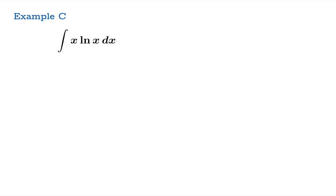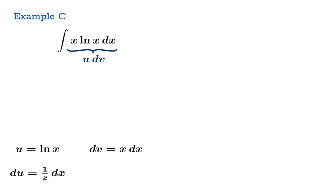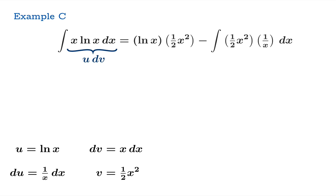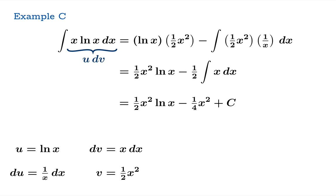Let's look at a final example: x·ln(x). Once again we choose u and dv to account for the whole integrand. We take u = ln(x) and dv = x dx. Then du = (1/x)dx and v = (1/2)x². Now, uv minus the integral of v du gives us our expression, and you'll notice there's cancellation in the integrand on the right, giving something whose anti-derivative we can find. And we've figured out the anti-derivative of x·ln(x).